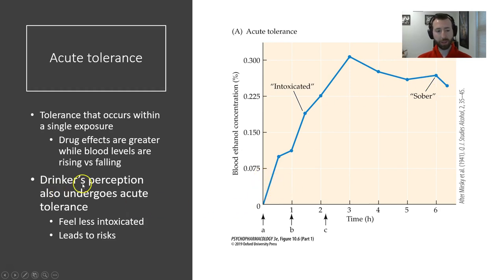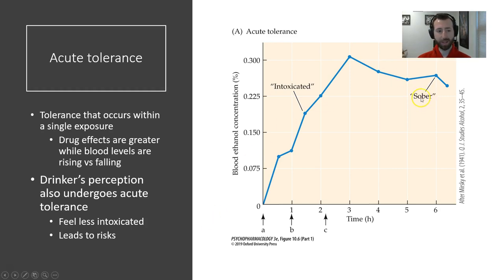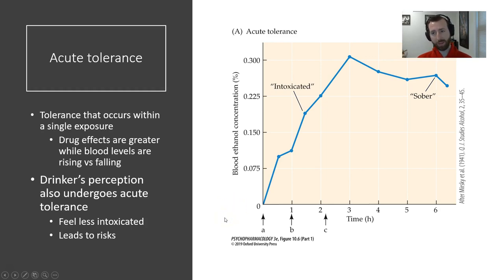In addition to this, a drinker's perception also undergoes acute tolerance. People feel less intoxicated when they are coming down after the peak of intoxication. This can unfortunately lead to risk-taking — people might feel sober enough to drive, for example, when their BAC is still certainly beyond the legal limit.